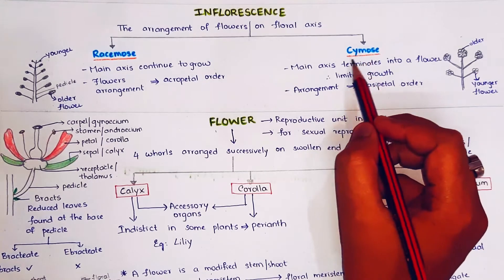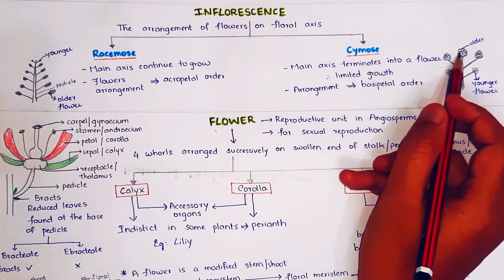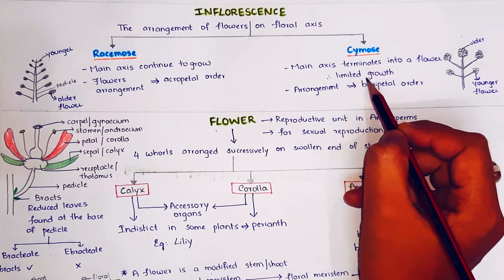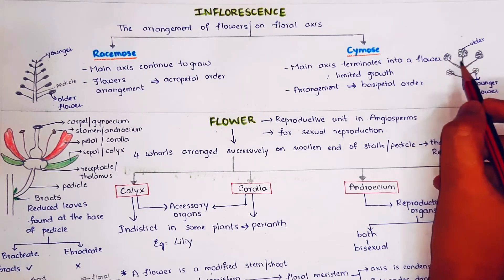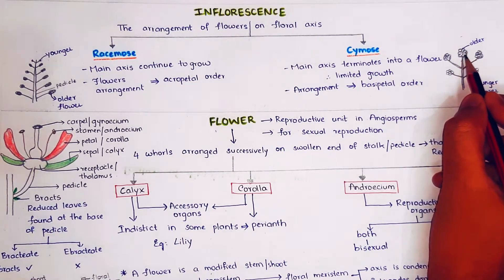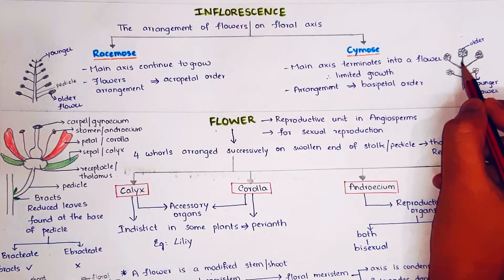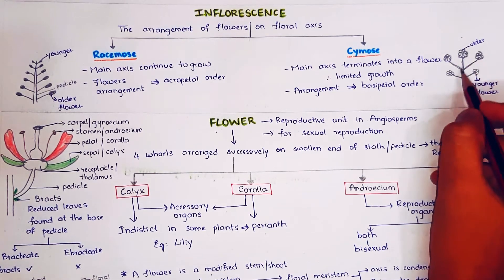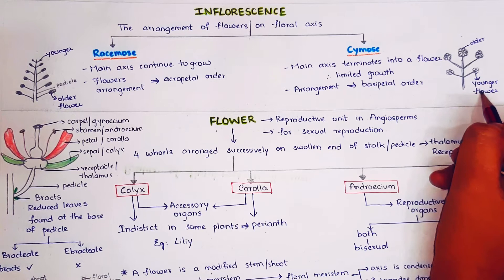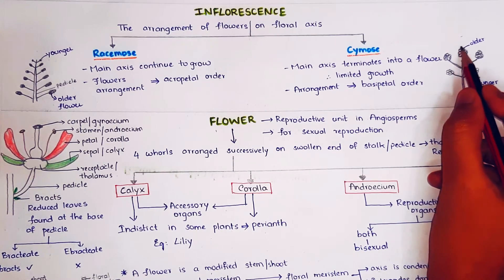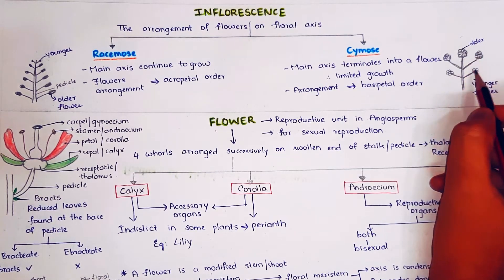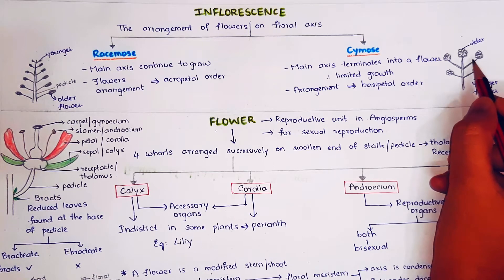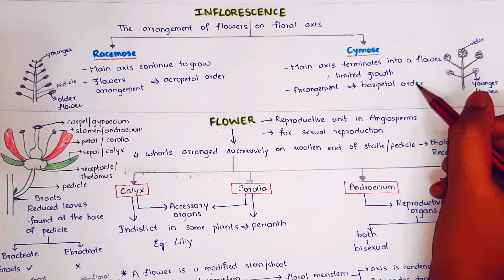Coming to cymose: the main axis terminates into a flower. In cymose, the inflorescence is of limited growth. The main axis terminates into a flower, and the younger flowers are formed at the base of the older flowers. So the younger flowers are at the base of the pedicel and the older flowers are at the apex of the pedicel. This type of arrangement, where younger flowers are at the base and older flowers are at the apex, is called basipetal order.